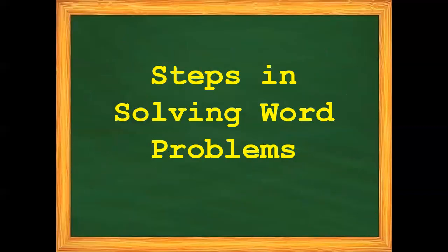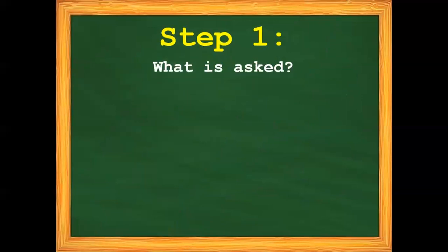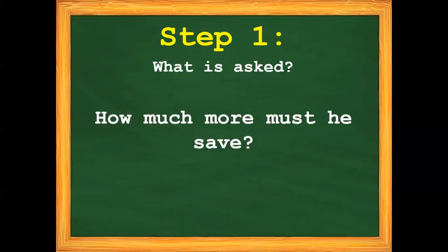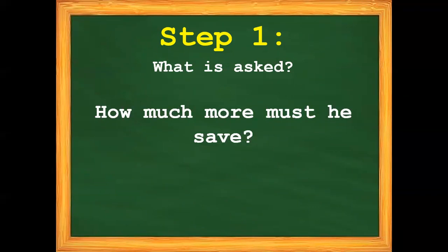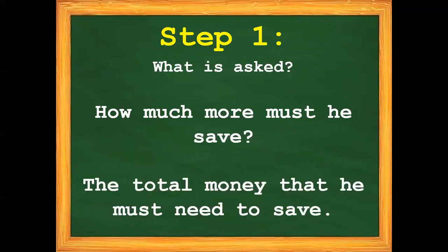So again, what are the steps in solving word problems? First, we have to understand the problem. Step 1: what is asked? How much more must he save — that is, the total money that he must need to save.